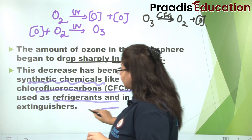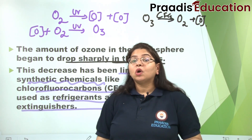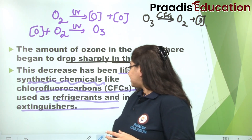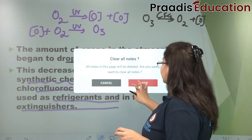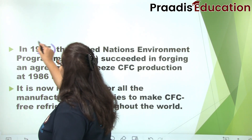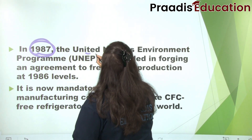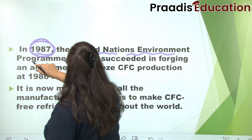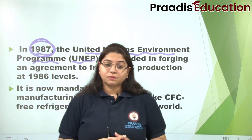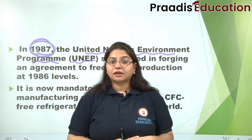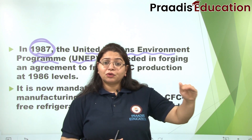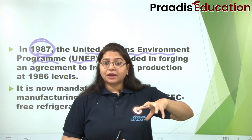Ye CFCs kahan use hote hain? Refrigerators mein, fire extinguishers mein, aur air conditioners mein. Jab humne samajh liya ki inke kaaran hai, toh humne 1987 mein ek program mein — jo United Nations Environment Program (UNEP) tha — saari countries milin aur ek settlement kiya. Decide kiya ki 1986 mein jo level tha chlorofluorocarbons ka, usi level pe rokna hai — isse upar nahi jaana chahiye.